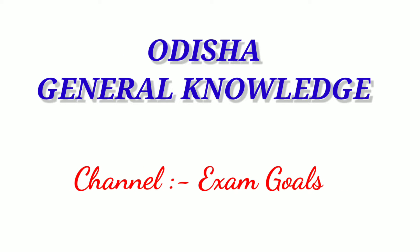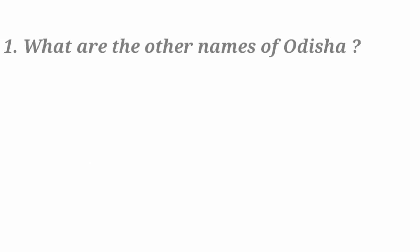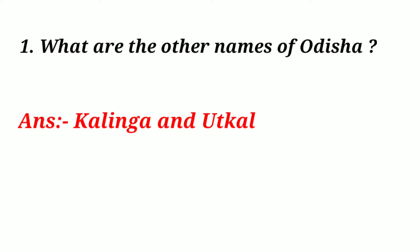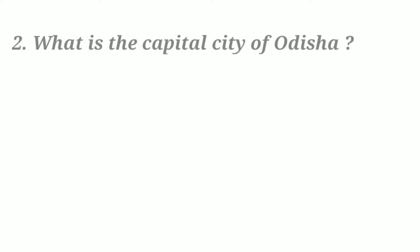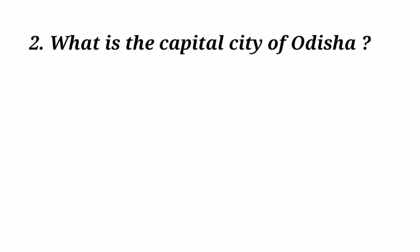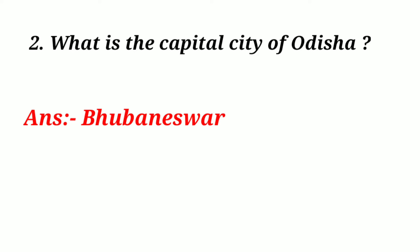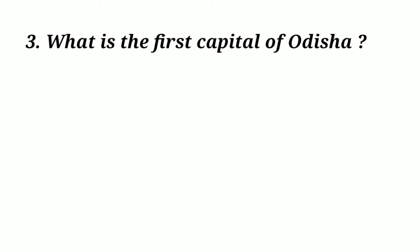Hello everyone, welcome to Exam Goals. Today in this video we are going to discuss Odisha general knowledge questions. What are the other names of Odisha? Answer: Kalinga and Utkara. What is the capital city of Odisha? Answer: Bhubaneswar. What is the first capital of Odisha? Answer: Cuttack.